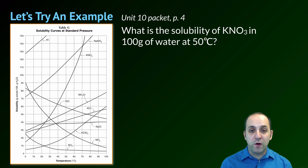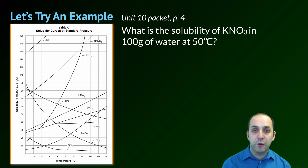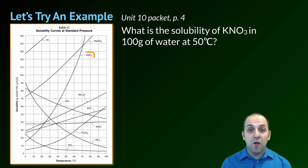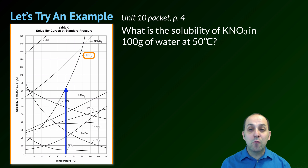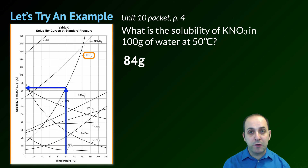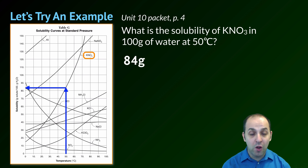This first question is on page 4 of your unit 10 packet: what is the solubility of potassium nitrate in 100 grams of water at 50 degrees Celsius? I find the potassium nitrate line on reference table G — this, by the way, is the most common mistake students make, reading the wrong line. Make sure you find the right line for the right substance. Once I've found the potassium nitrate line, I go to 50 degrees Celsius and read the total mass off of the Y axis. For this particular question, I read a value of 84 grams. If you wrote 83 or 85 grams, that's not a big deal, but 98 or 20 grams would be a problem. Try to be as accurate as possible in reading graphs like reference table G.